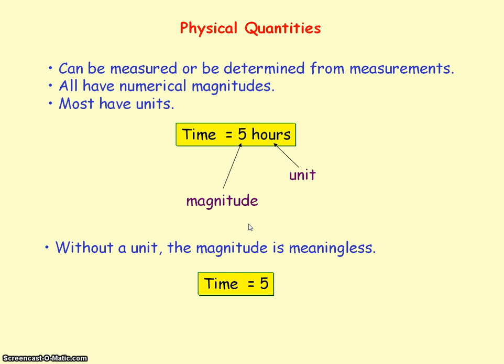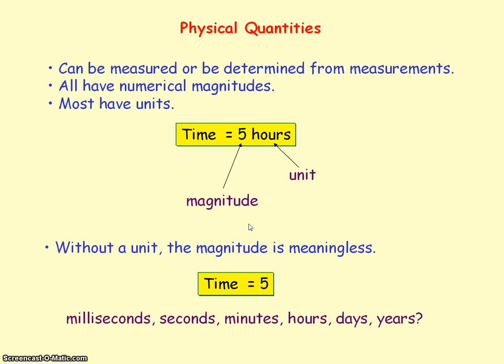So if we had time equals five, what does that mean? Does it mean five milliseconds, seconds, minutes, hours, days, or years? So it's always important to state the unit when given the magnitude of a physical quantity.